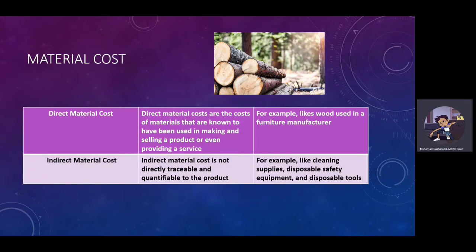The first one we will talk about is Material Costs. There are two: Direct Material Costs and Indirect Material Costs. Direct Material Costs are the cost of materials that are known to have been used in making and selling a product or providing a service. For example, like wood used in furniture manufacturing.